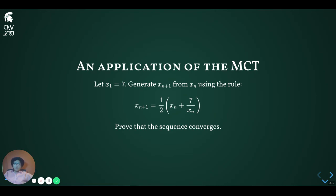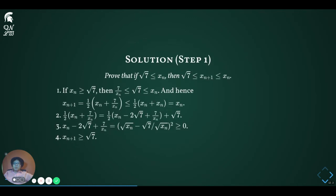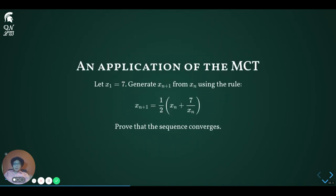Unless you have seen this problem before, you will not be able to guess what the sequence converges to. The generating rule has an interesting property: if x sub n is larger than root 7, then x sub n+1 is also greater than root 7 and is no more than x sub n. The value root 7, by the way, can be found by solving the recursive rule for fixed points — that is, we look for values such that substituting s for x sub n+1 and x sub n into the generating rule gives us an identity. Such an s will solve s equals one half (s plus 7 over s). This turns out to be a quadratic equation with a unique root at s equals root 7. For many recursive rules, the fixed point values often have special meanings. Let's return to the proof.